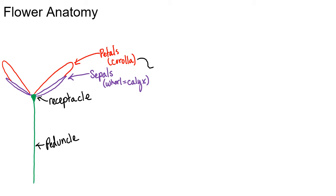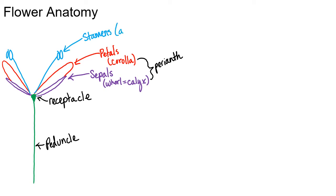Together the corolla and the calyx are called the perianth. Just inside the petals you have another whorl composed of structures called stamens, and that whorl is called the androecium — which means 'house of man' — where pollen is produced. Within that you have another whorl of carpels, also called pistils, and that whorl is called the gynoecium — 'house of woman.'